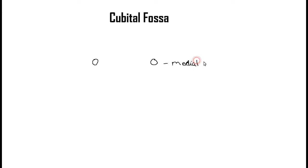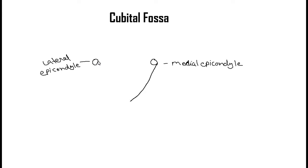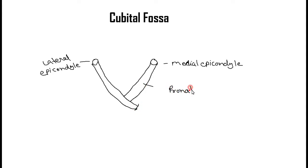Today we will see the cubital fossa, its boundaries and contents. On the medial side we have the medial epicondyle, and on the lateral side we have the lateral epicondyle of the humerus. From the medial side one muscle comes and from the lateral side another muscle comes. The medial side muscle is known as the pronator teres, and this forms the lateral border of the pronator teres.